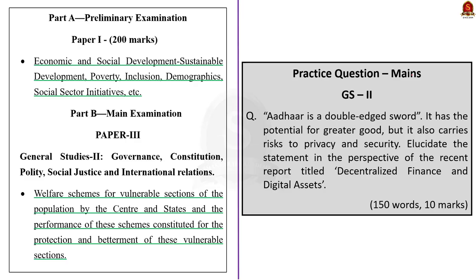Before getting into the discussion, let us look into the syllabus. In the prelims, this discussion will come under economic and social development, sustainable development, poverty, inclusion, social sector initiatives, etc. In the mains, it comes under GS Paper 2 under the topic of welfare schemes for vulnerable sections of the population by the center and the state and the performance of these schemes constituted for the protection and betterment of these vulnerable sections.